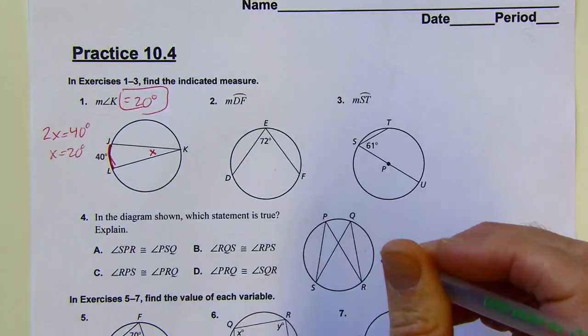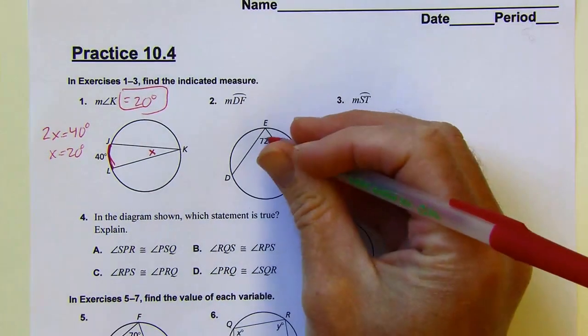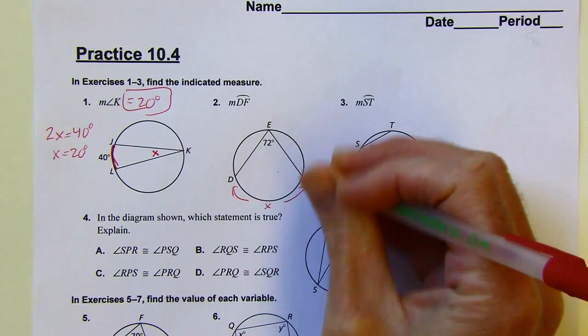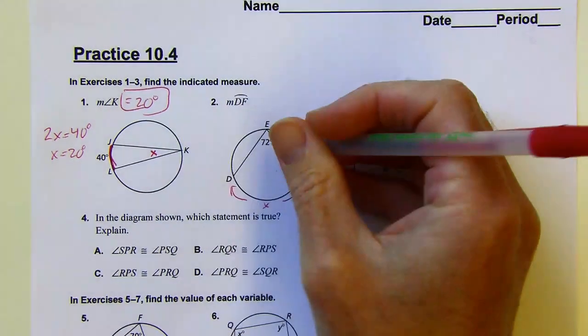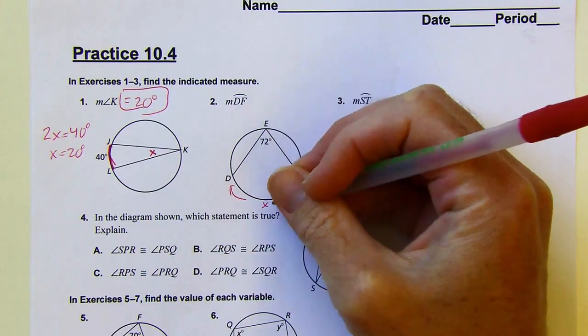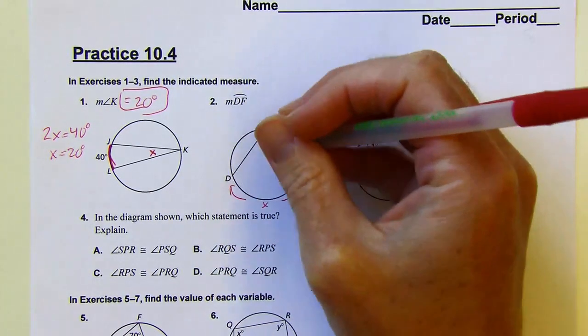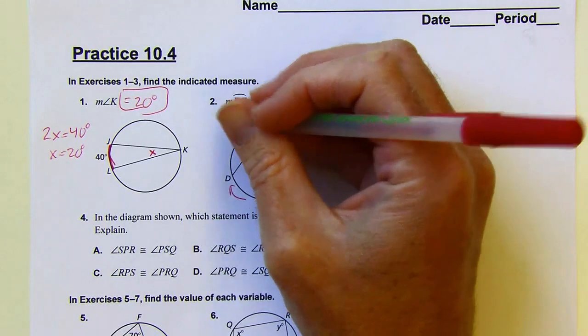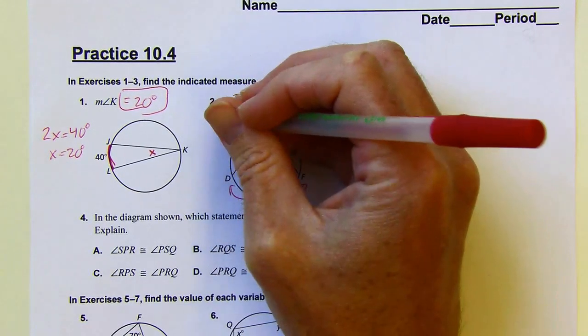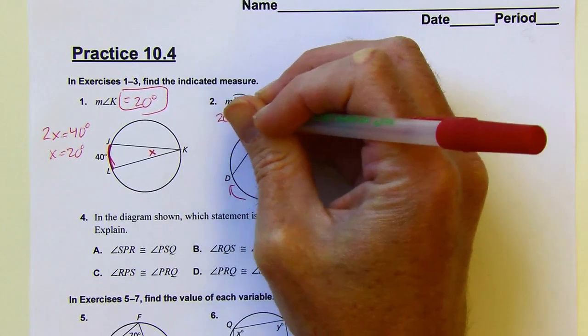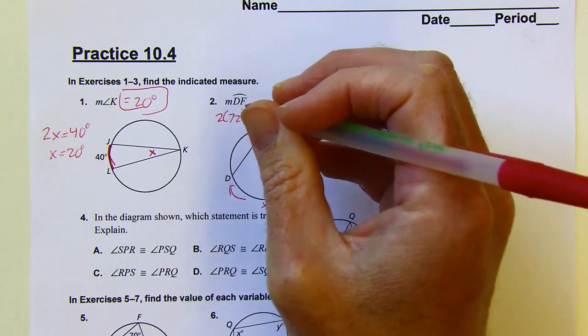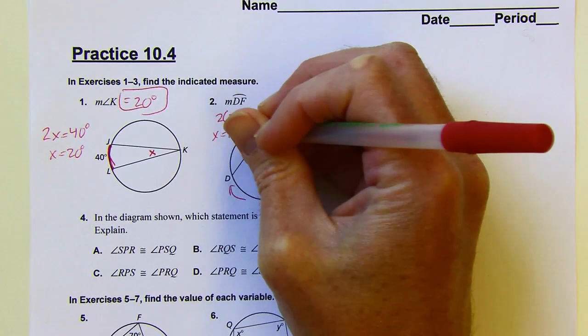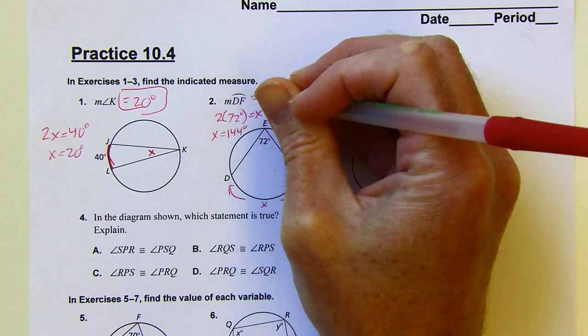Alright, next problem. So this time we know the inscribed angle. We don't know the measure of the intercepted arc, and that's what they're asking us for. But we can just say this is going to be 2 times 72 degrees. So I can say 2 times 72 degrees equal x, and that will be 144. That's the measure that we're looking for here.